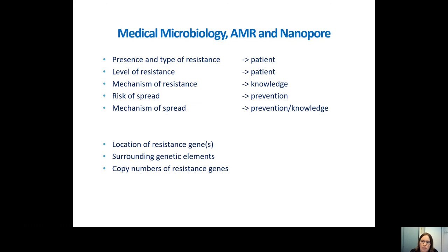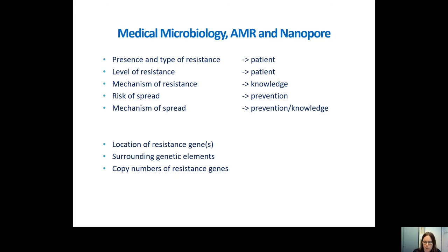The mechanisms of spread are important for prevention but also for knowledge. To answer all this, we need to know the location of the resistance genes — are they present on the chromosomes of the bacteria or on the plasmid? What are the surrounding genetic elements? Can resistance genes easily jump from one plasmid to another because of genetic elements? And also the copy number of resistance genes or plasmids, as this can say something about the level of resistance, for example the MIC.